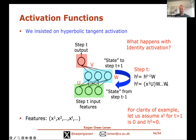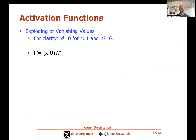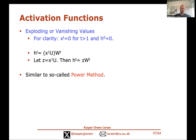The hidden neurons output after T steps will be x_1 times U times W raised to the T-th power. For shorthand, let z = x_1 times U; then the hidden output after T steps is z times W^T. This looks very similar to something called the power method.